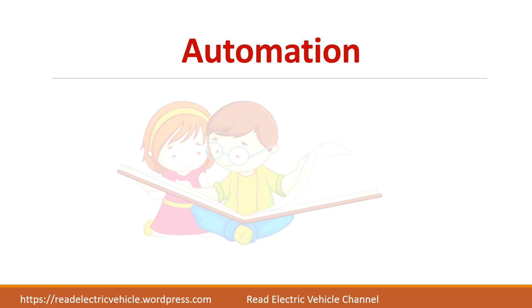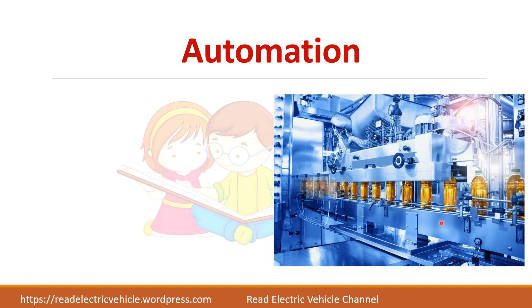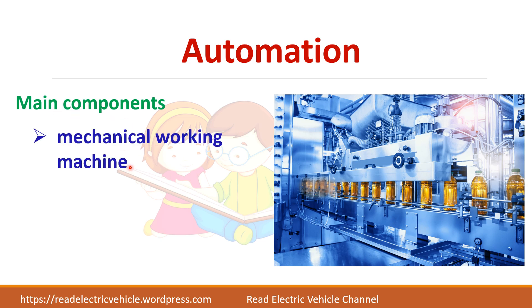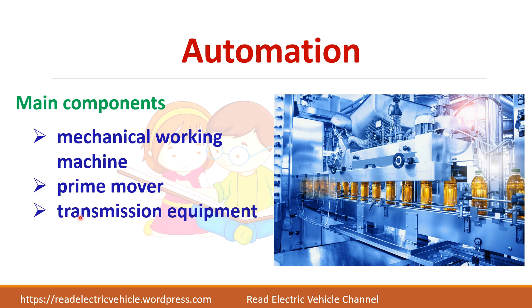Most of our industries are almost automated. You can see this picture where bottles are filled automatically. To fill the bottles in a sequence, this machine has to be in motion. How to achieve this motion? Using a prime mover. In any production unit you have three main components: a mechanical working machine, a prime mover to move this machine, and a transmission equipment used to match the speed of these two machines.